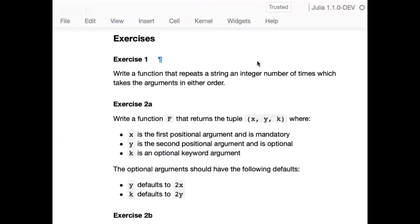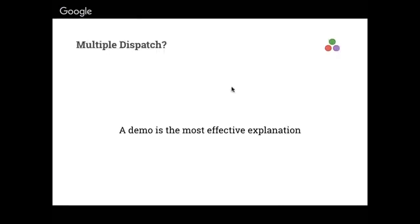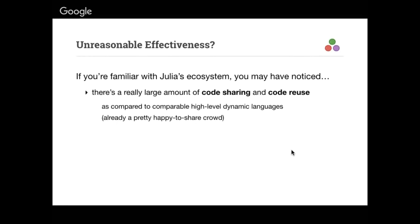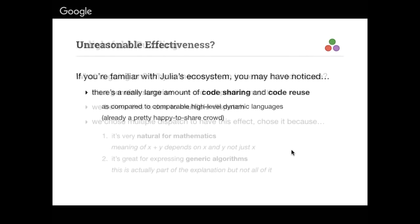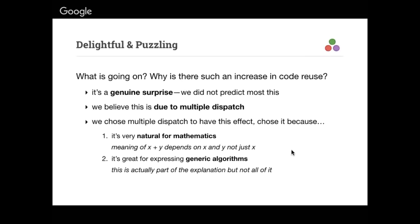If you're familiar with Julia's ecosystem, you may have noticed a really large amount of code sharing and code reuse — notably more than other comparable high-level dynamic languages, which are already a pretty happy-to-share crowd. We were genuinely puzzled by this. We did not predict most of it. There's sort of part of it we kind of intended, but part of it was a genuine surprise. We think it's due to multiple dispatch.